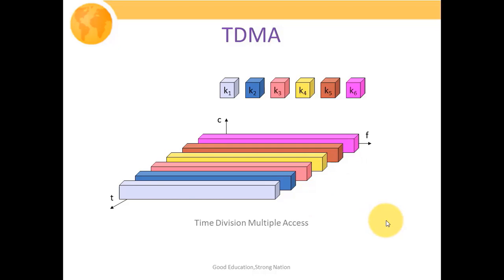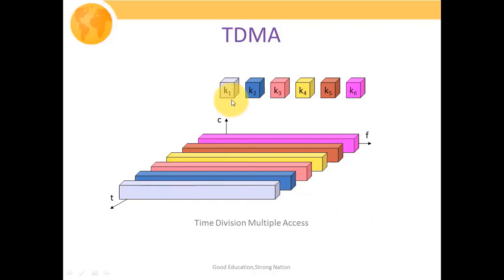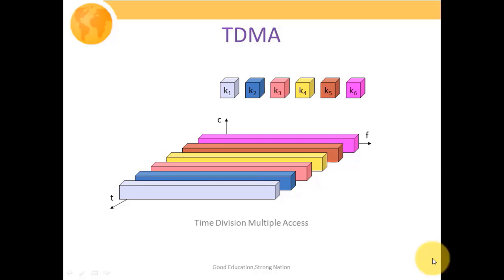Guard bands are there to prevent the overlapping of consecutive users' signals due to timing mismatch. From this figure it is clear that in TDMA, the complete frequency band is made available to each individual user — K1, K2, K3 up to K6 — but the complete frequency band is available to the user only for a smaller duration of time. This is how the TDMA system functions.